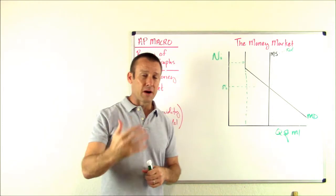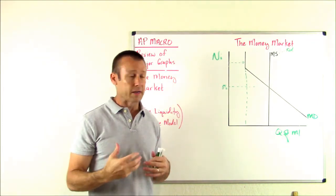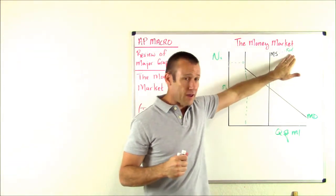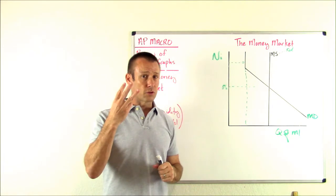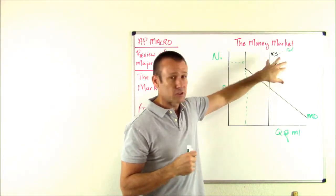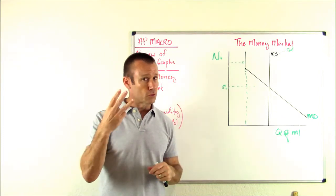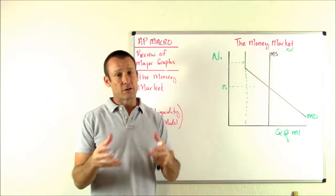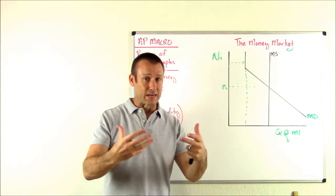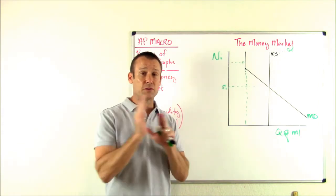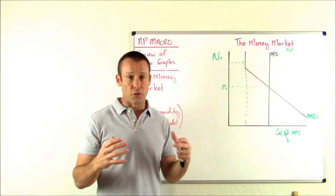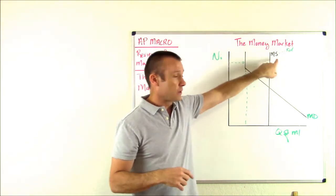What's going to cause these curves to shift? The money supply is straightforward — it's the Fed. There are three tools of the Fed: open market operations, the discount rate, and the required reserve ratio. When the Fed manipulates those tools, the money supply shifts. If we're in a recession, the Fed would do open market purchases, lower the discount rate, or lower the required reserve ratio to increase the money supply, shifting it to the right.